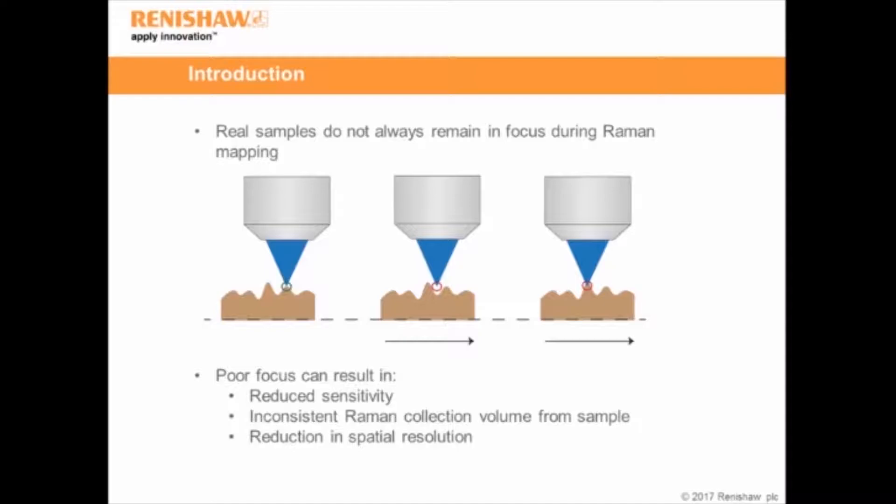This poor focus can result in reduced sensitivity, so we lose Raman intensity. It also changes the actual Raman collection volume from the sample, so we can no longer use intensity-based methods to make measurements in a quantitative form. It also reduces our spatial resolution.